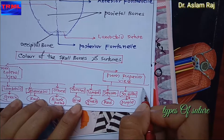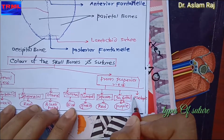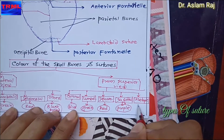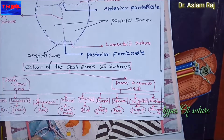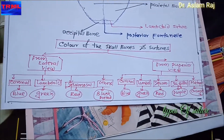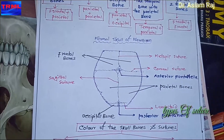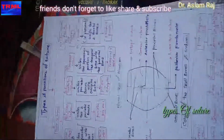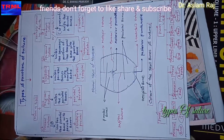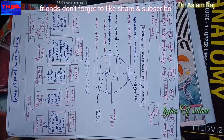So you must notice that the sagittal and metopic sutures differ in color between lateral and superior views, while the others remain the same color in both views. That was the color coding of the skull bones and sutures. Those were the main types and functions of sutures. Bye guys, see you in the next video.